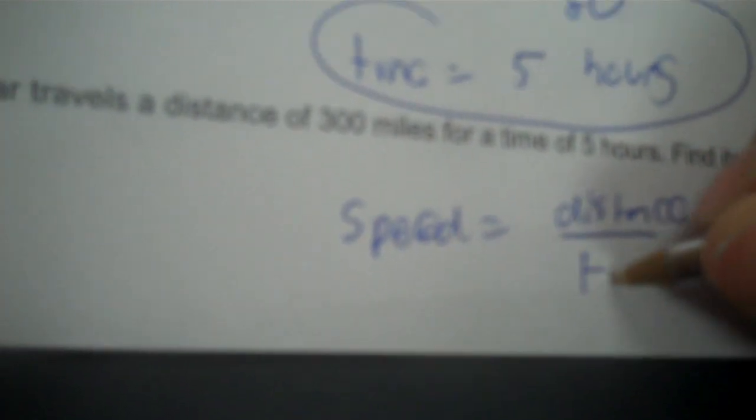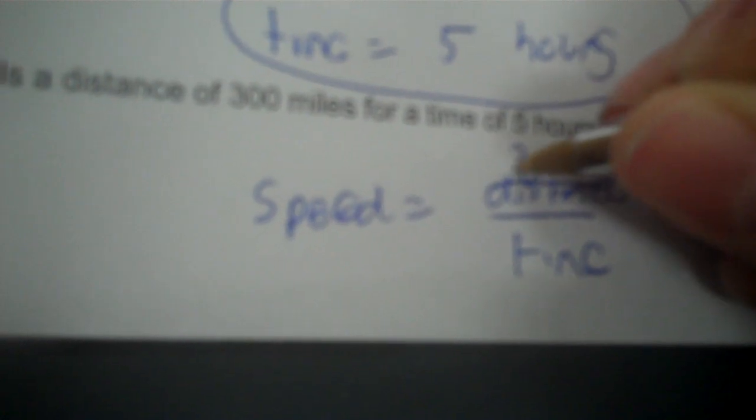A car travels a distance of 300 miles for a time of 5 hours — find its speed. Speed equals distance divided by time. The distance is 300 miles and the time is 5 hours. 300 divided by 5 is 60 miles per hour.